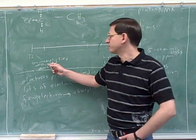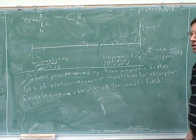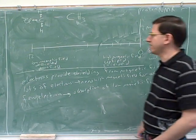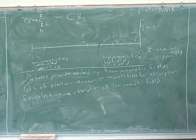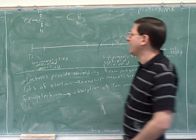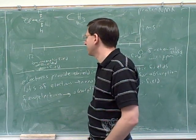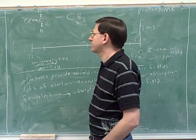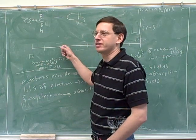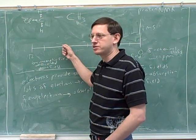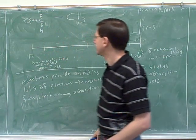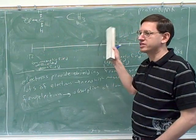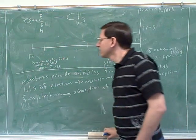Deshielded protons end up absorbing downfield. Since they're deshielded, it doesn't take as big a magnetic field to get the absorption. Eventually you just want to have it memorized: things that are close to electronegative atoms appear further to the left on the spectrum. You don't need to think through the logic every time because our main goal is just to interpret the spectrum.